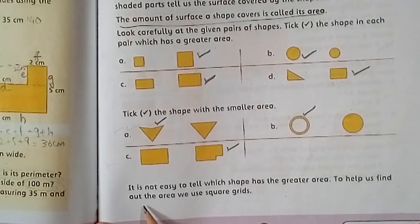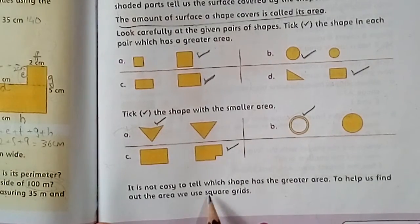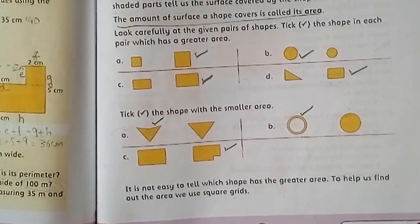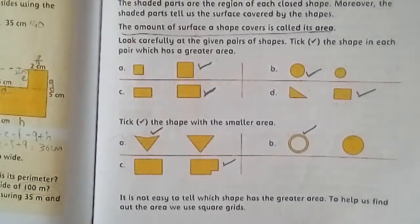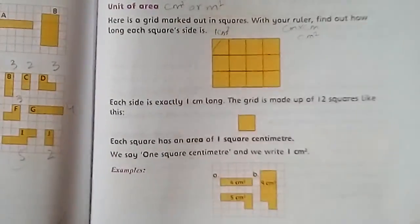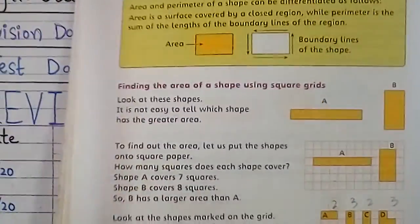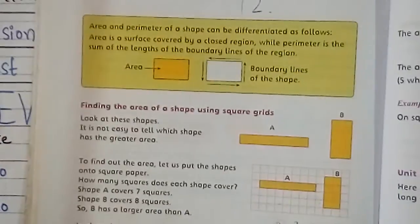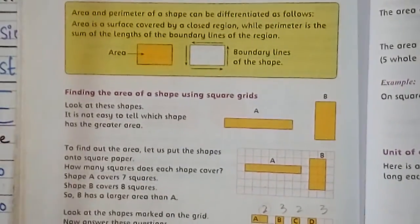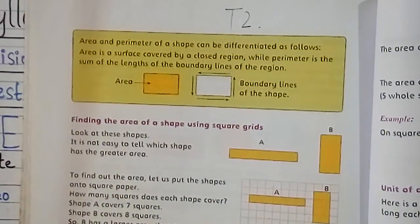It is not easy to tell which shape has the greater area. To help us find out the area, we use square grids. Sometimes, looking at the figures, we cannot decide which shape's area is larger — so for such shapes we use square grids.